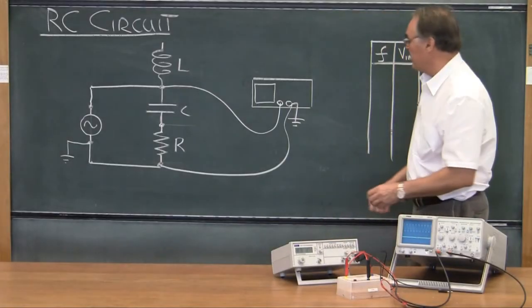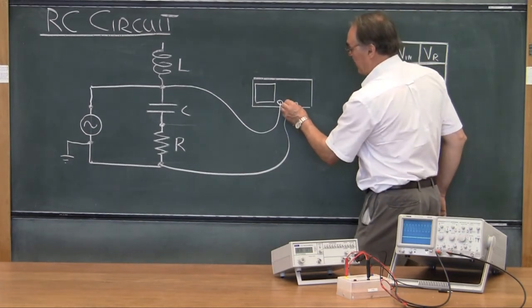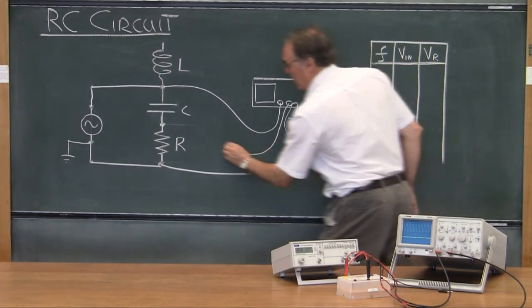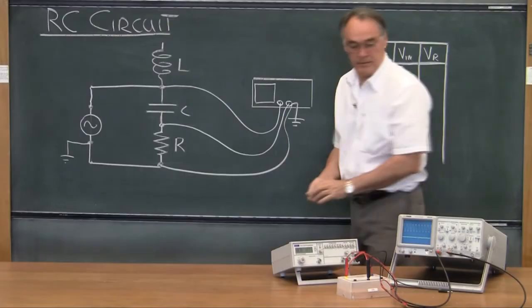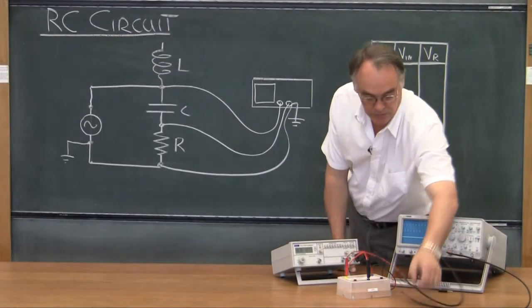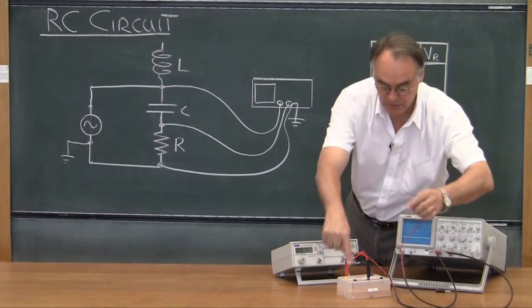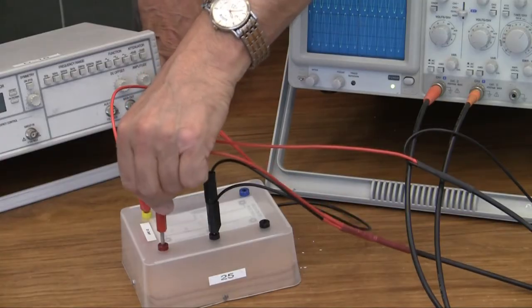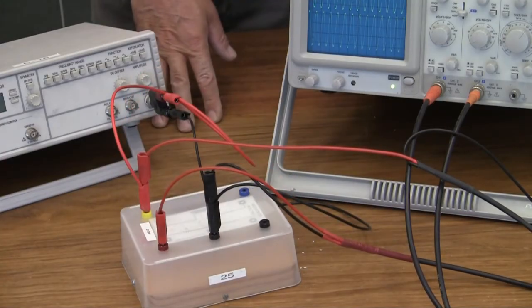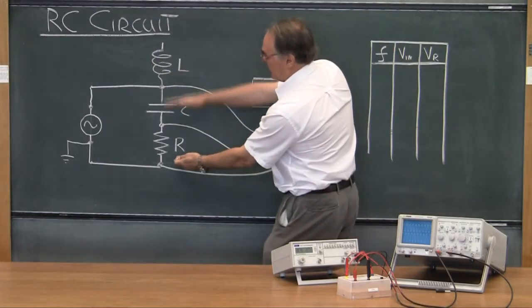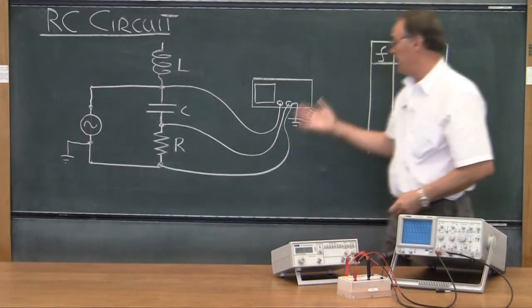And the last connection to make is channel two, from here to there. That's channel two to the resistor. Now I'm in a position to read these two voltages at the same time on the oscilloscope.